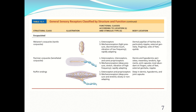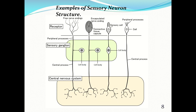This illustration shows the Meissner's corpuscles, Pacinian corpuscles, and Ruffini endings. Another illustration shows examples of sensory neuron structures side by side. You can see the free nerve endings here — that's an unencapsulated receptor — and this is an encapsulated nerve ending covered in connective tissues and neurolemmocytes, basically myelin.